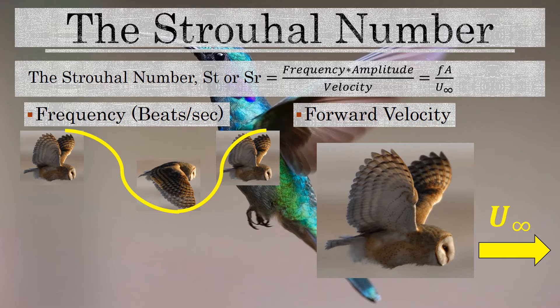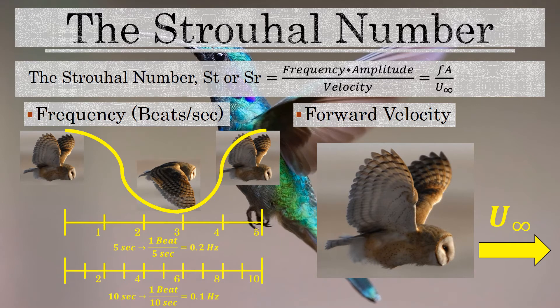If this owl takes five seconds to perform a down stroke followed by an up stroke, then the frequency will be one beat over five seconds, or 0.2 hertz. If it takes 10 seconds, that gives a frequency of one beat per 10 seconds, or 0.1 hertz. Hertz just means cycles per second. This is what we're looking at in terms of frequency in the Strouhal number equation.